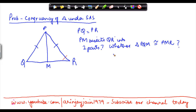I have been asked to find whether these two triangles, namely PQM and PRM, are congruent. This is one part of the triangle and this is another part. Now, if these triangles are congruent, then basically two sides must be equal and the angle between them should also be equal.